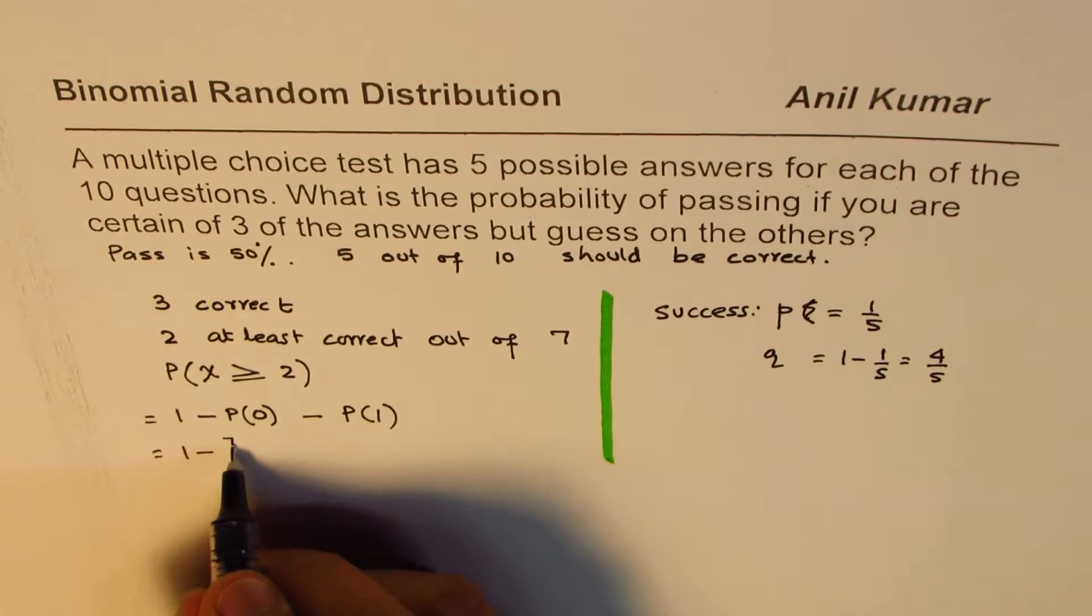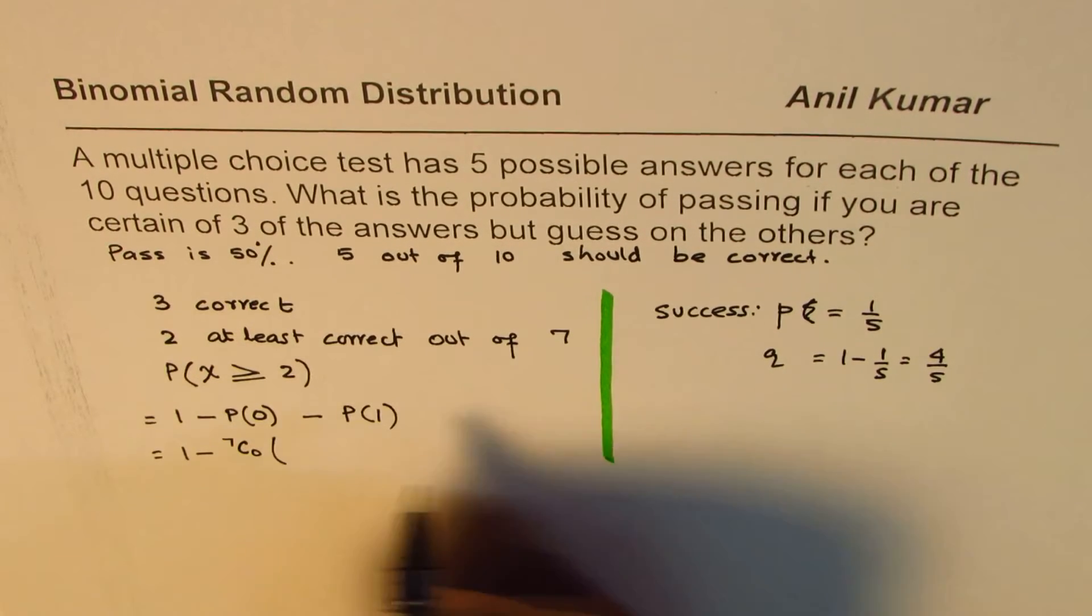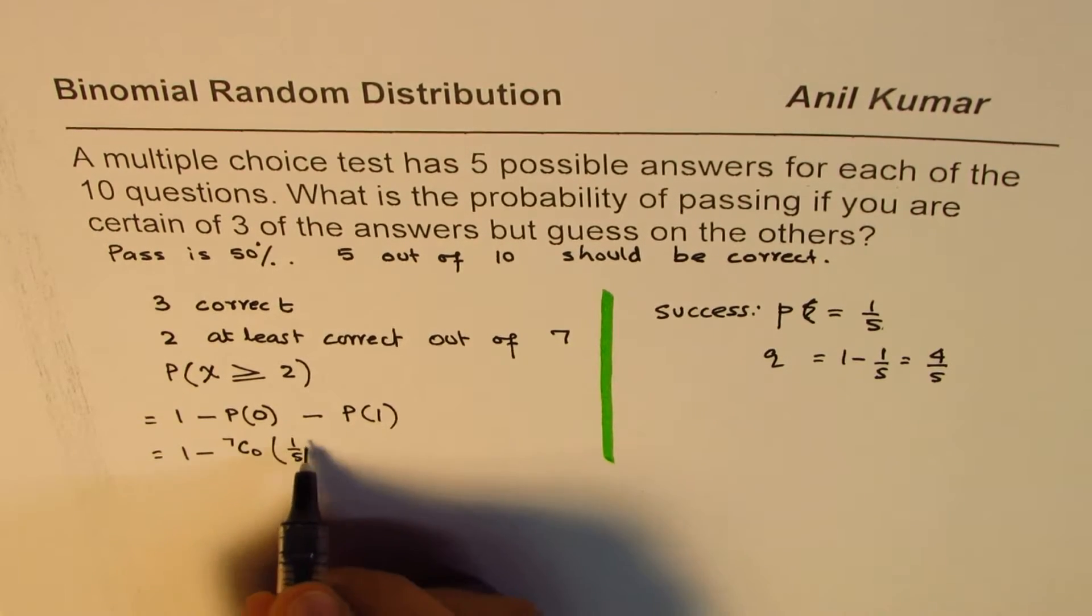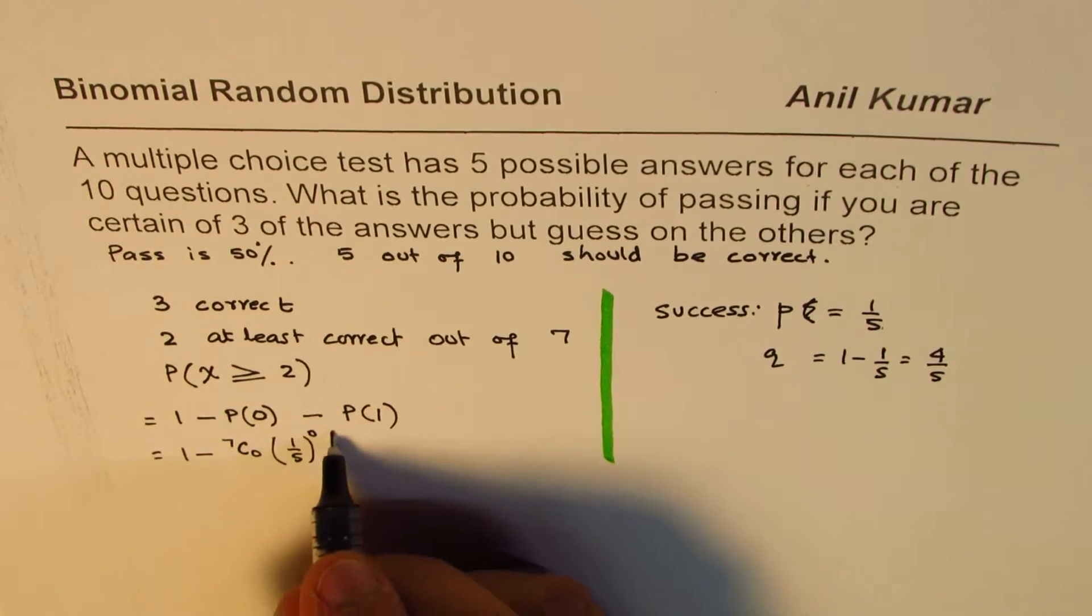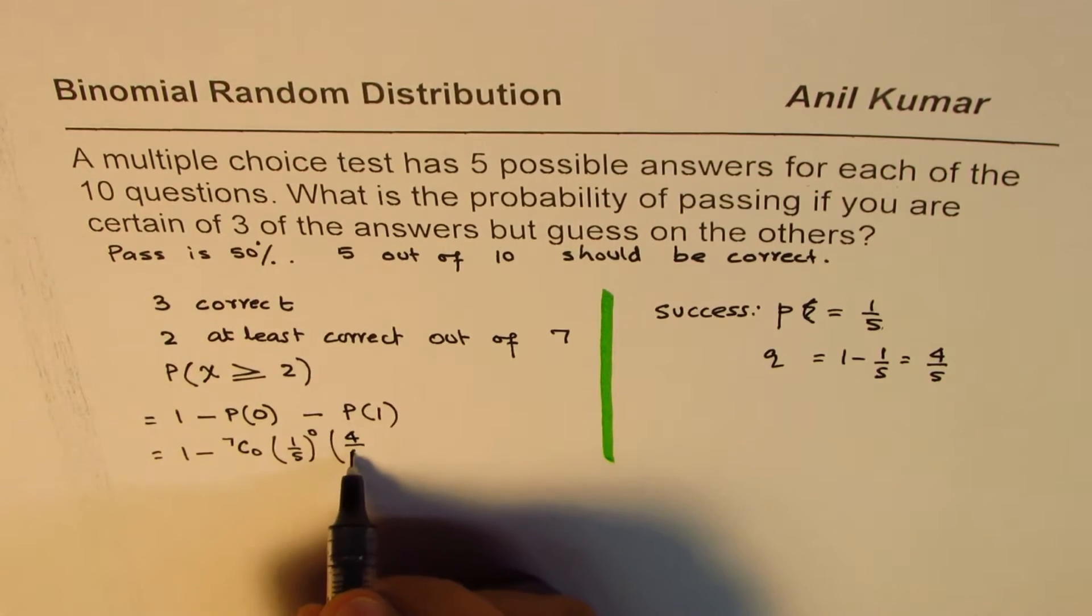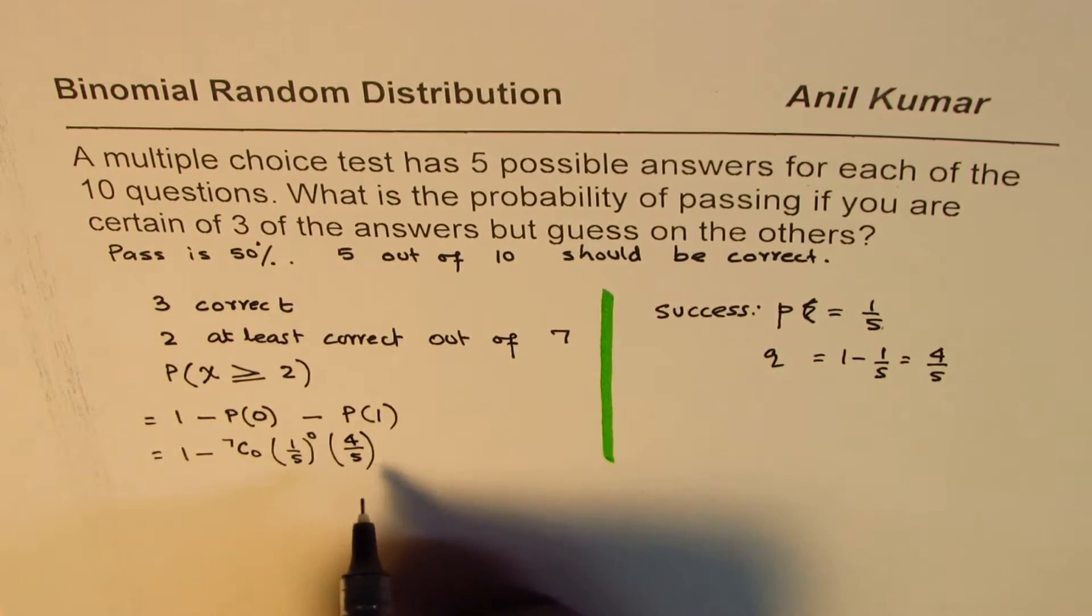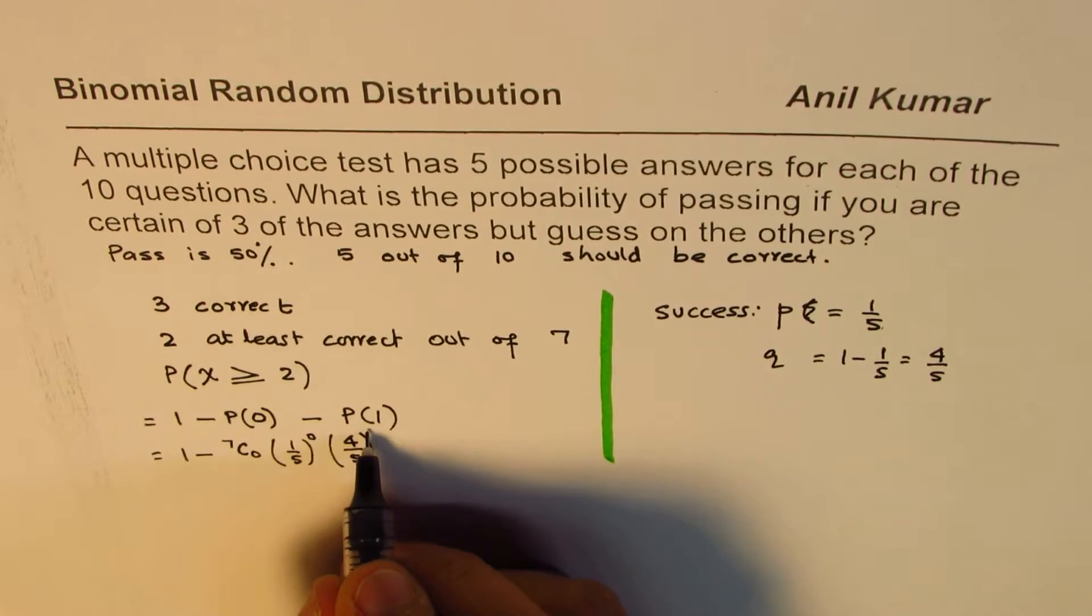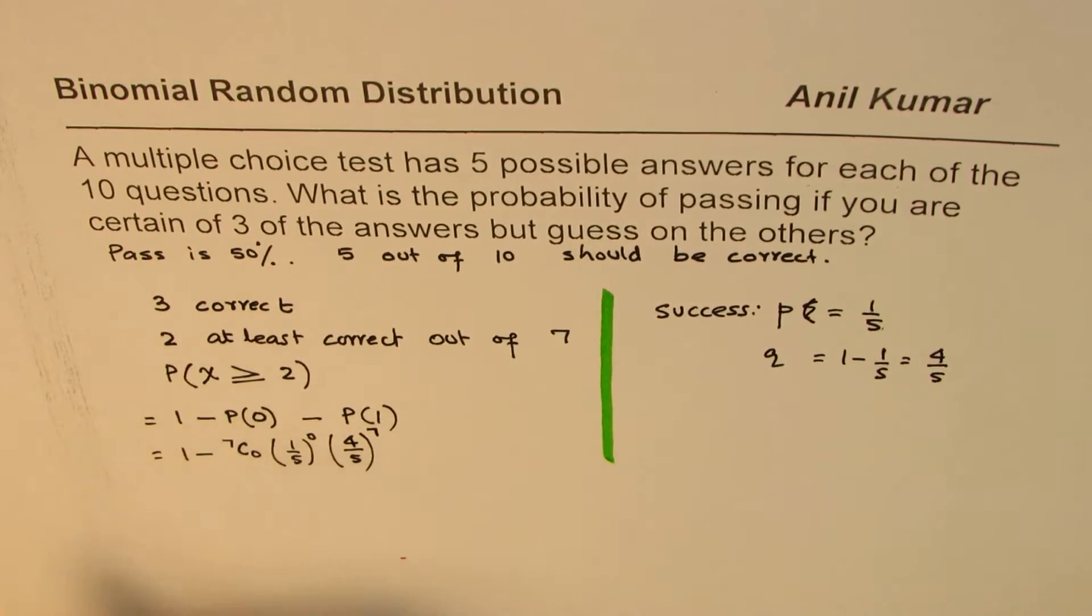In that case, we are looking for 7C0. Probability for correct, that is p, is 1 over 5. This becomes to the power of 0. And probability of wrong is 4 over 5. Since all are wrong, that is probability none of them is correct. So that will be 7. So this is the first one.